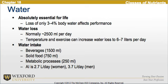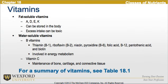Moving on to vitamins, there are two types. Fat-soluble vitamins are A, D, E, and K, and can be stored in the body. Excess intake, however, can be toxic. There are also water-soluble vitamins such as the B vitamins — thiamine, riboflavin, niacin, pyridoxine, folic acid, pantothenic acid, and biotin — all involved in energy metabolism, and vitamin C for maintenance of bone, cartilage, and connective tissue.